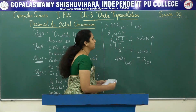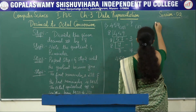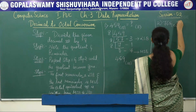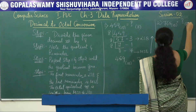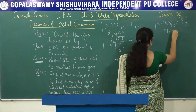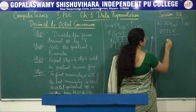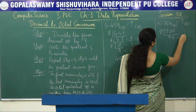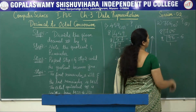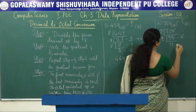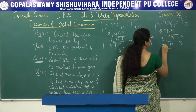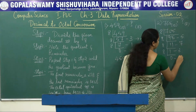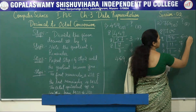Second problem: 765 base 10. Divide 765 by 8: 8 × 95 = 760, remainder 5. Then 95 ÷ 8: 8 × 11 = 88, remainder 7. Then 11 ÷ 8: 8 × 1 = 8, remainder 3. Then 1 ÷ 8: quotient 0, remainder 1. Mark the LSB and MSB.